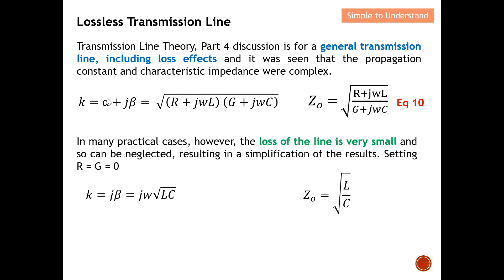In many practical cases, however, the loss of the line is very small, because a transmission line is a good conductor. Once it's a good conductor we can assume the loss is very minimum and can be neglected. This results in a simplification by setting R and G equal to zero. If I set R and G equal to zero, what remains is j² times ω² times LC. Taking the square root, I can put jω outside the square root, giving jω√(LC). This is the new propagation constant for a lossless transmission line.